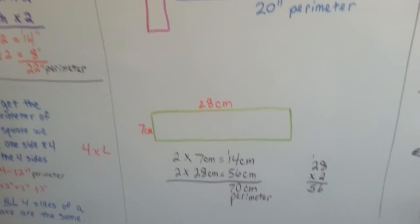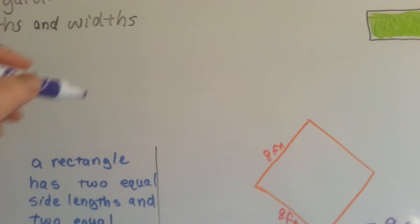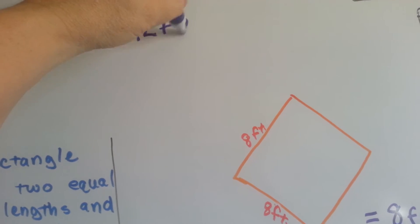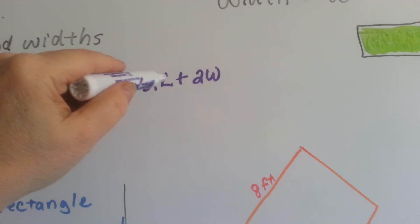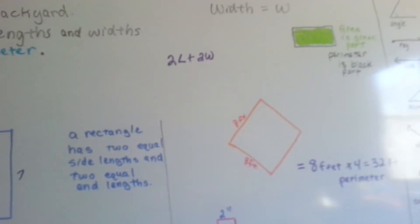So there's actually a formula that older kids and grown-ups use, and it's 2L plus 2W. And it's their way of saying 2 times the length plus 2 times the width. And you'll see that in high school and college.